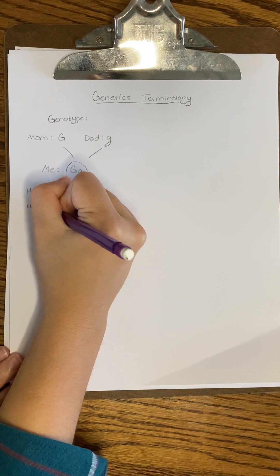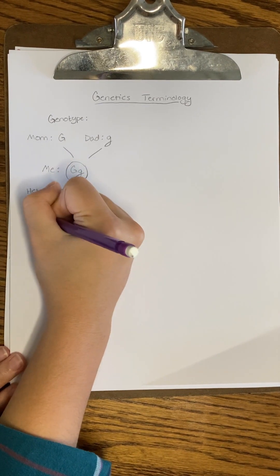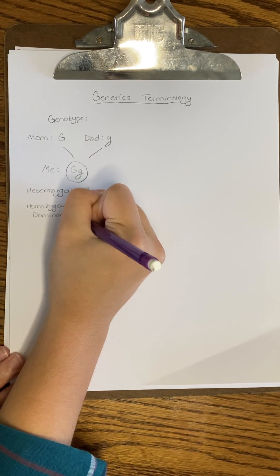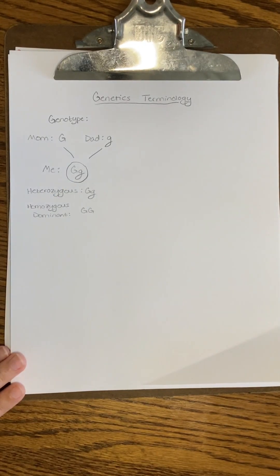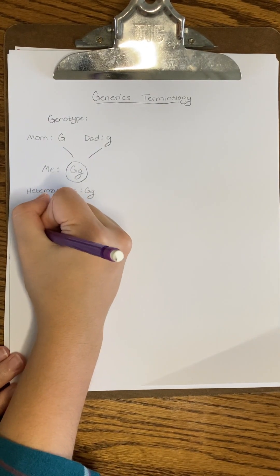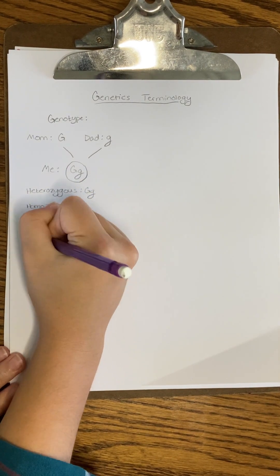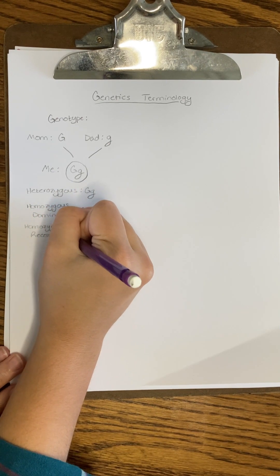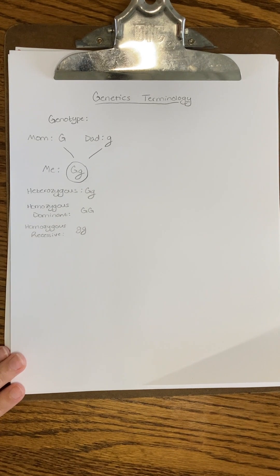If both of my parents were to donate the dominant allele for brown hair, then my genotype would have been capital G, capital G, which is called homozygous dominant because my two alleles are identical, and the prefix homo means same. If my parents had each donated the recessive allele for some other hair color, then my genotype would have been lowercase g, lowercase g, which is a homozygous recessive genotype.